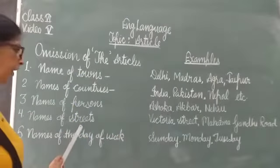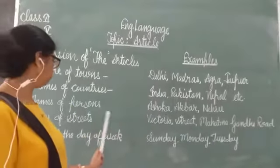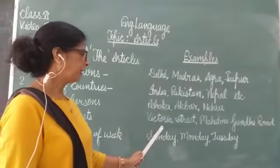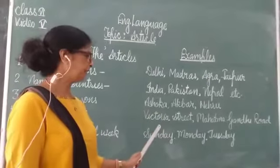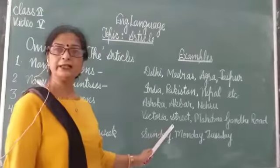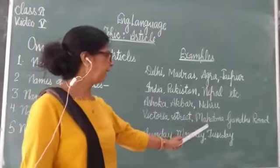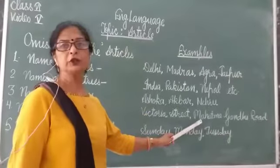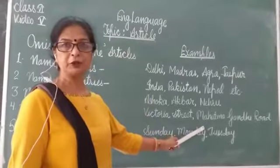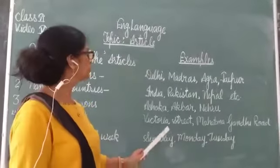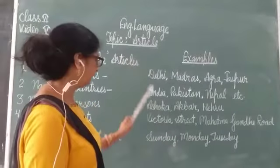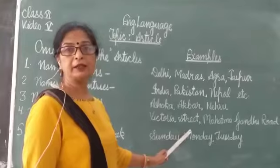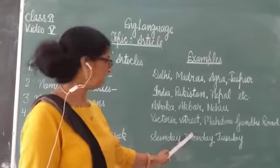Names of streets. We are now moving to names of streets. For example, 'Victoria Street' — it is the name of a street. And second is 'Mahatma Gandhi Road' — it is also the name of a road. That is why we will not use the article 'the', because both are names of proper nouns.